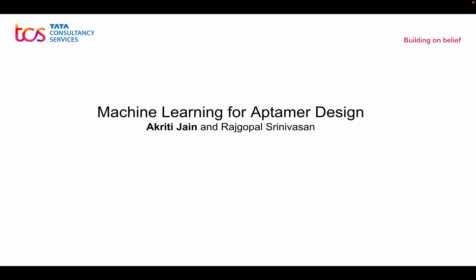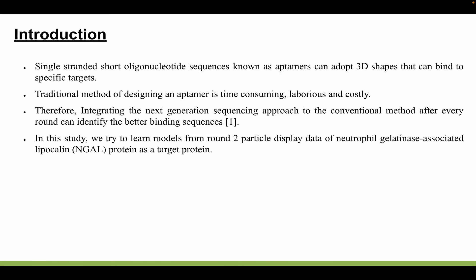I'm Akriti Jen from TCS Research. Today I'm going to talk about my work on machine learning for aptamer design. A single-stranded short oligonucleotide sequence known as an aptamer binds to a specific organic molecule such as proteins, DNA, and RNA with high binding affinity and specificity. The conventional SELEX approach is time-consuming, laborious, and costly.